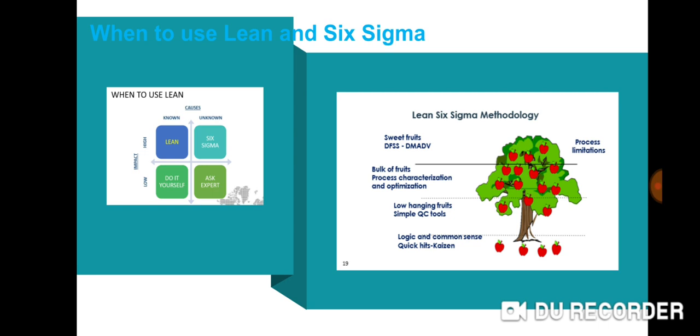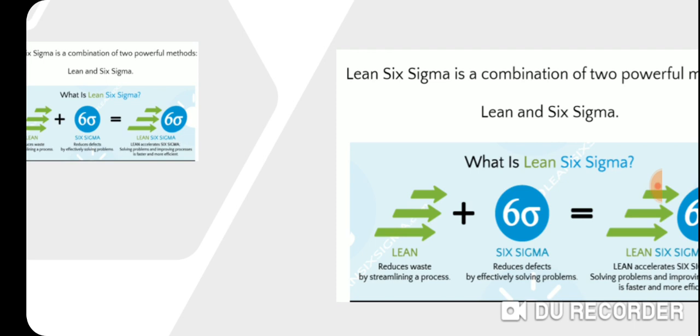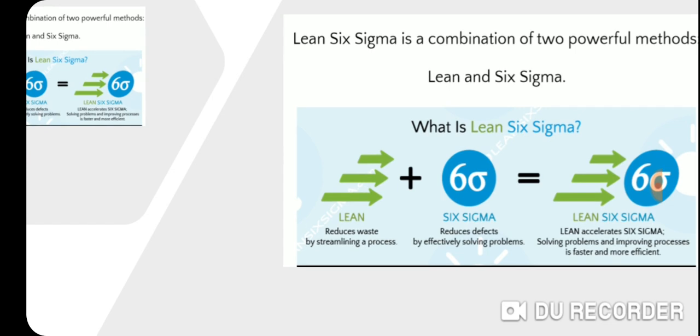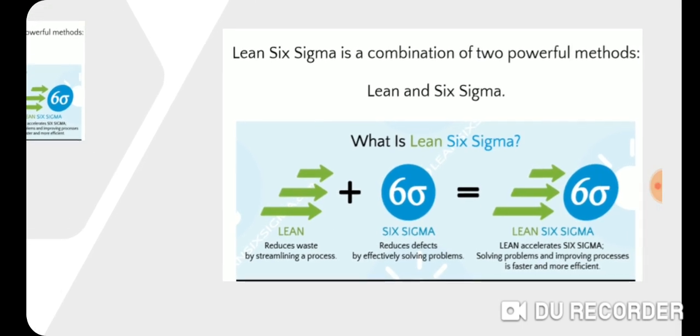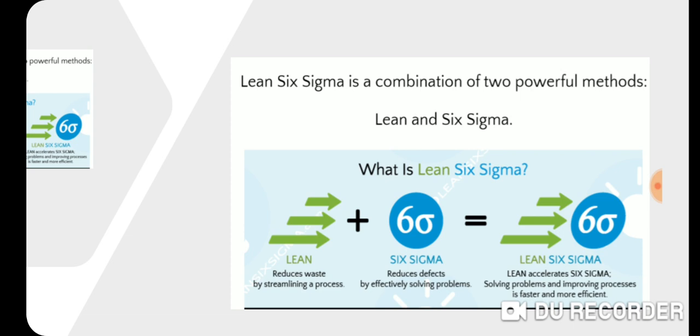One question could be: do they complement each other? Can we use both the tools? Yes, of course. Lean, as you see here, reduces the wastages or eliminates the wastages, whereas on the other side, Six Sigma reduces the defects. Both of the techniques problem-solve the problems.